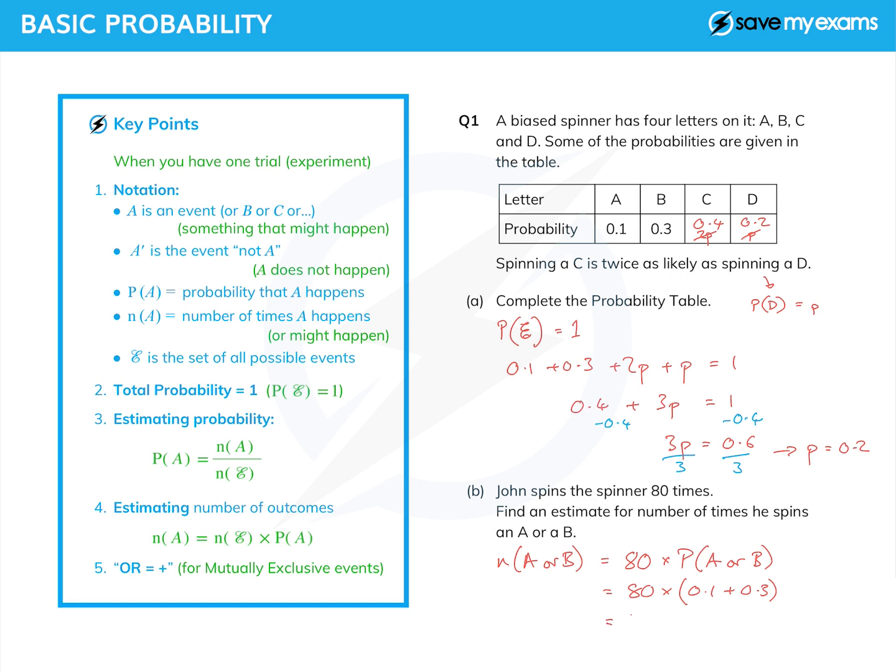So there's the probability of A, that's 0.1, plus the probability of B, which is 0.3. And A and B are mutually exclusive, because they can't happen at the same time. And if you work that out, you get 32. So on 32 of the 80 occasions, we would expect an A or a B. Obviously, that's only an estimate.